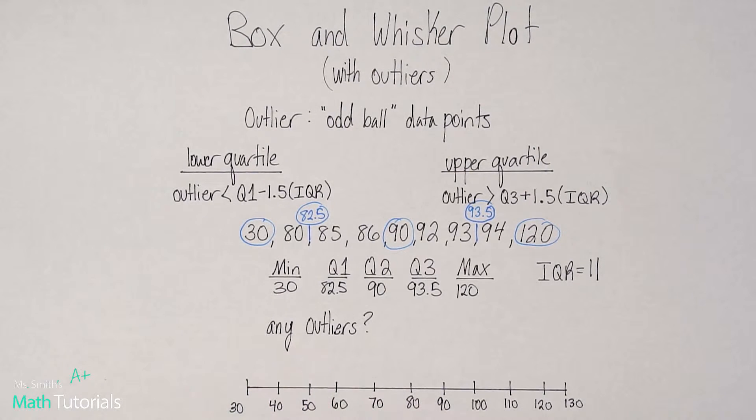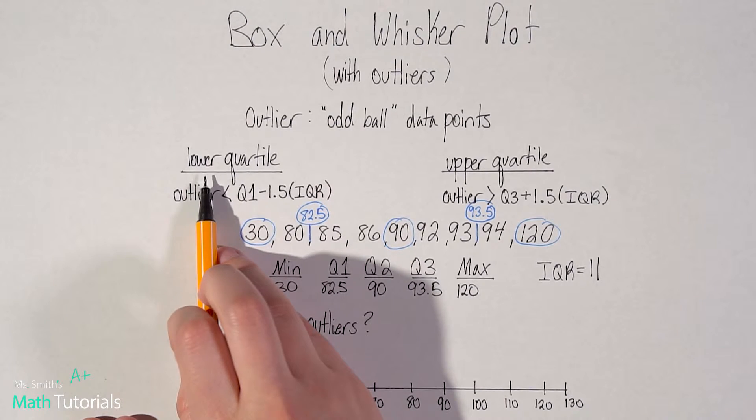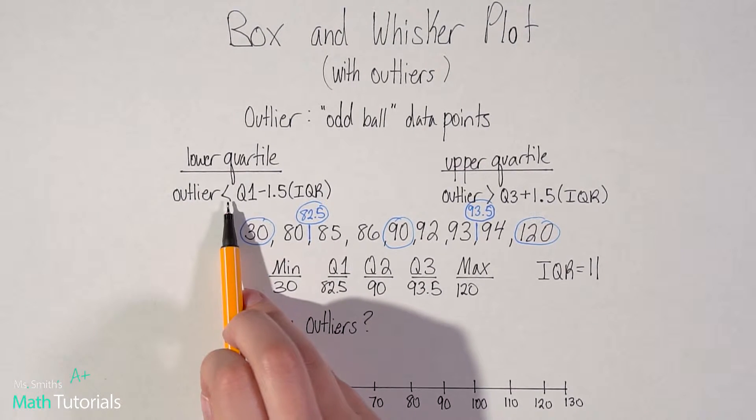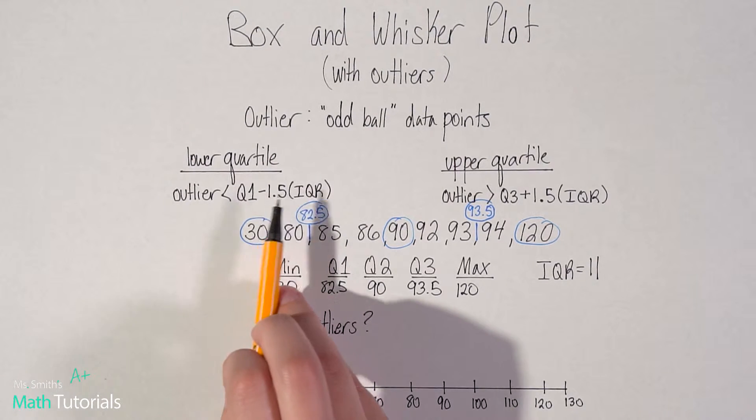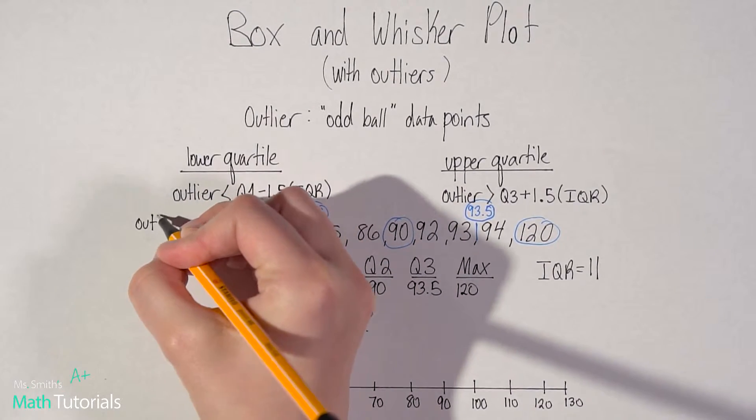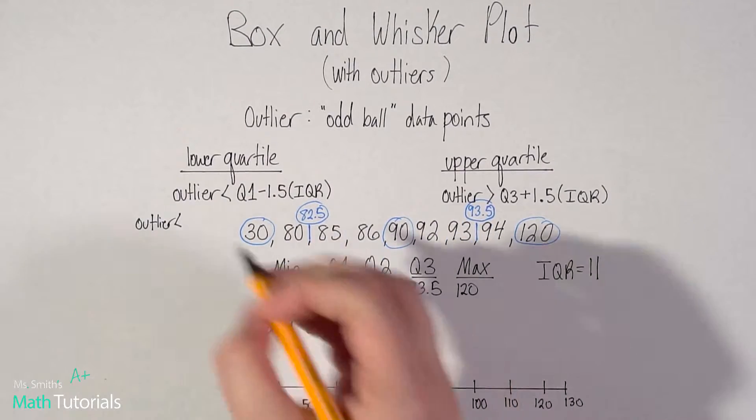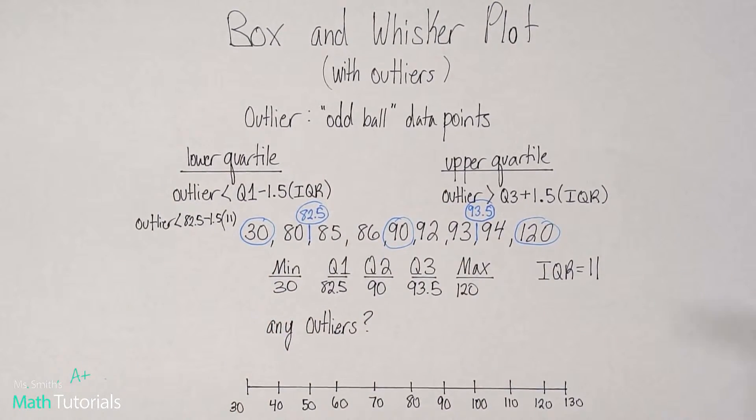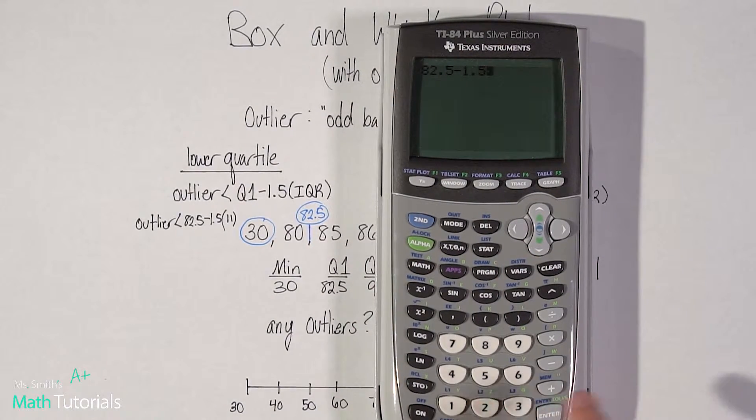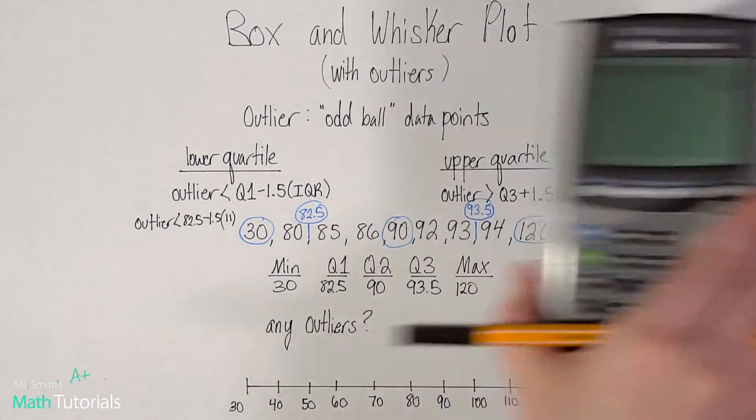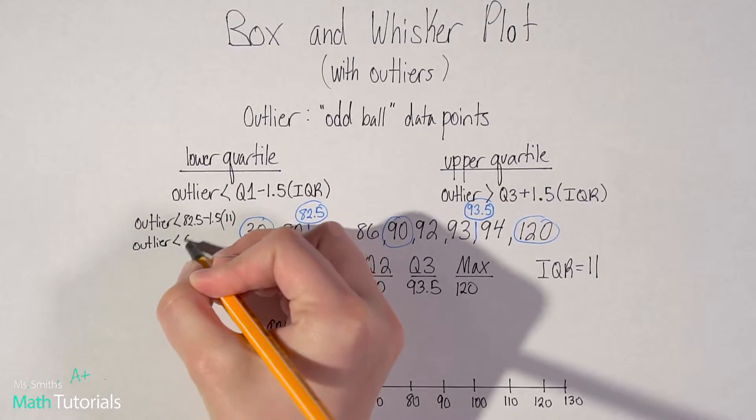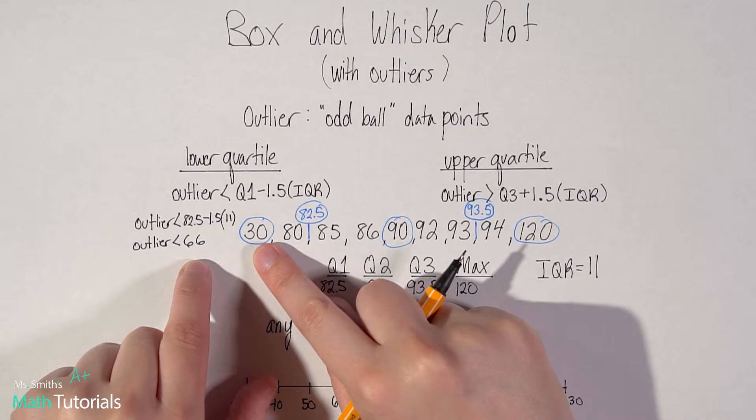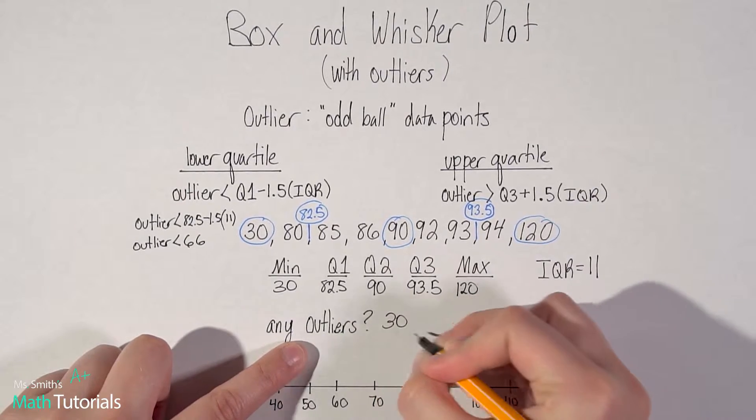Now onto the outliers. We need to know, are there any outliers in this data set? So for my lower quartile, which would be this suspected 30. So I'm suspicious of that 30. An outlier would have to be less than my Q1 value minus 1.5 times the IQR. So an outlier would be less than Q1, which we said is 82.5, minus 1.5 times the IQR of 11. So let's put that in the calculator. 82.5 minus 1.5 times 11. So an outlier would be less than 66. So I need to look at all my data points and say, do I have any data points less than 66? Yes, that 30. So that confirms that 30 is an outlier. So 30 is one.